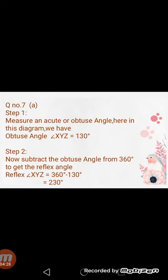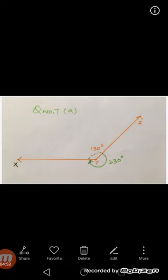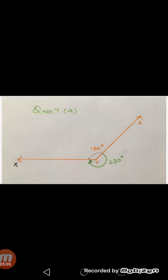In step 1 we measure the acute or obtuse angle given in the diagram, and we have that angle XYZ is equal to 130 degrees. In step 2 we will subtract that angle — 130 degrees — from 360 degrees to get the reflex angle. So we write: reflex angle XYZ equals 360 degrees minus 130 degrees, which is equivalent to 230 degrees. The 130 degrees is the internal angle given, and the reflex angle is equivalent to 230 degrees outside the angle.